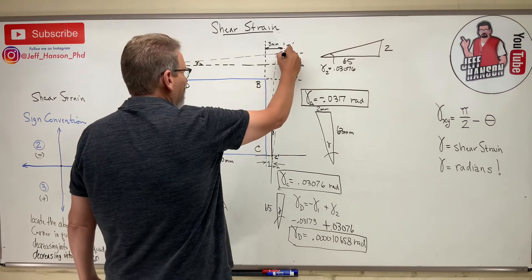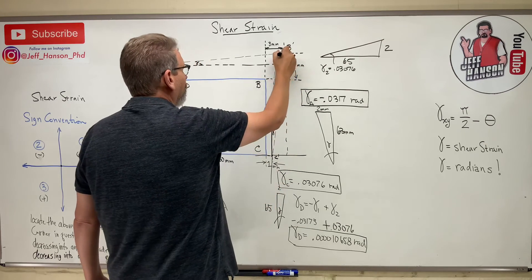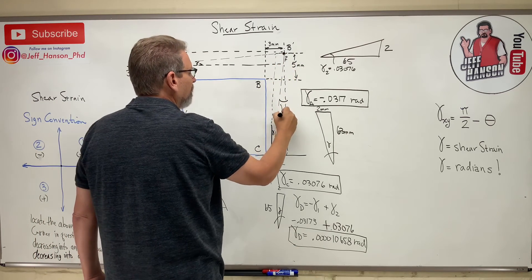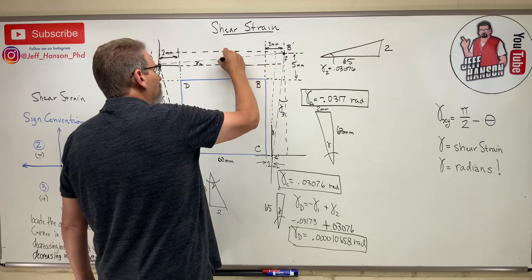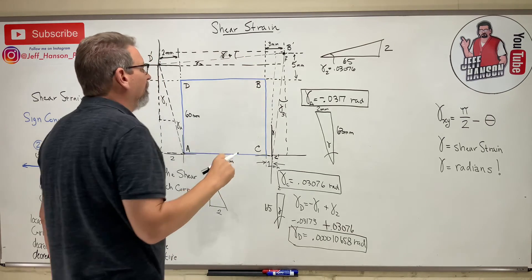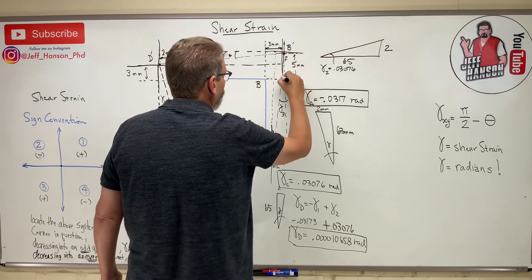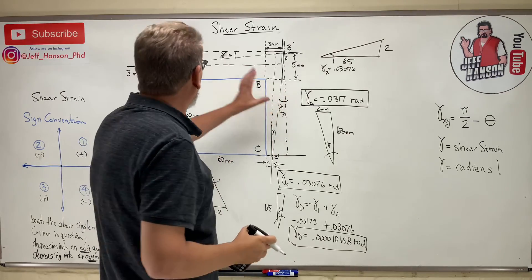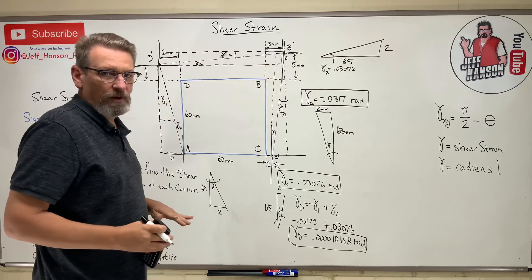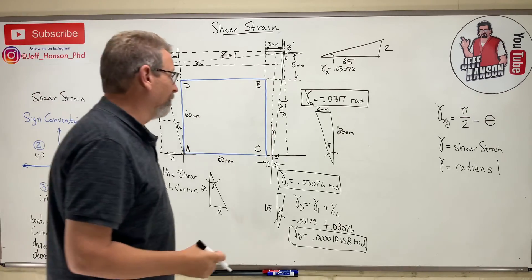And B is going to be the same thing. B, two triangles. I got one here, and one here, and I'll call this triangle here, I'll call it gamma 3, and I'll call this triangle gamma 4. And what's this one going to be? Here's my coordinate system. So this one, they're both going into quadrant 3, aren't they? This one goes into quadrant 3, that one goes into quadrant 3. Quadrant 3 is positive, so they're both going to be positive, they're going to add to each other, aren't they?